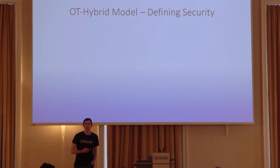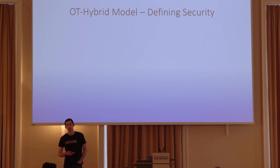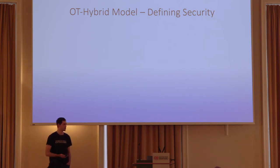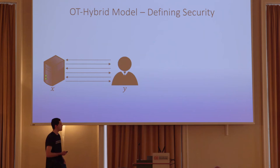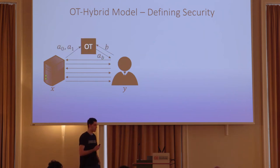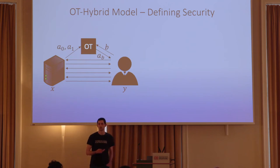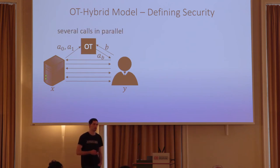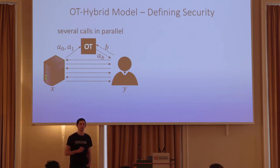Now we can formally define our model — the OT hybrid model — and define security. In this model, the parties can call the oblivious transfer functionality at any time in the protocol, and importantly, they can do this in parallel, calling the OT functionality many times in parallel. When do we say this protocol is secure? We use the real-ideal paradigm, where in the ideal world we have a trusted third party that cannot be corrupted.